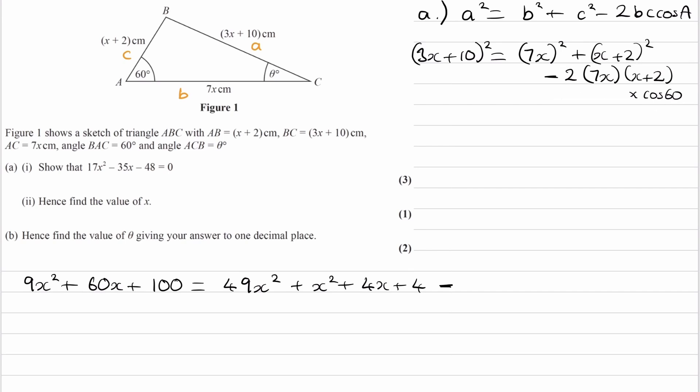Okay, so this term, cos of 60 is equal to a half. So that means that the 2 multiplied by the half will cancel out. So we're just left with the negative of this. Multiply that out. We end up with 7x squared minus 14x. So that's also including the minus sign that we have here.